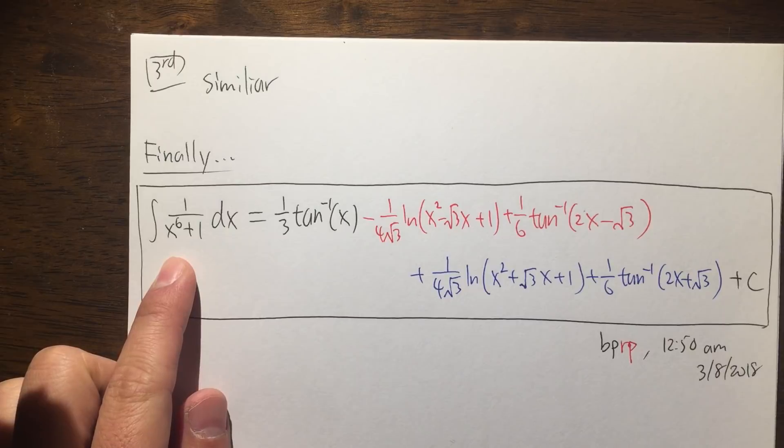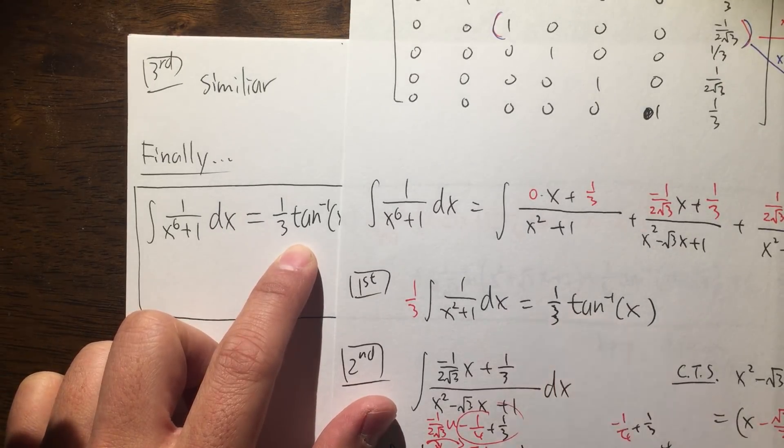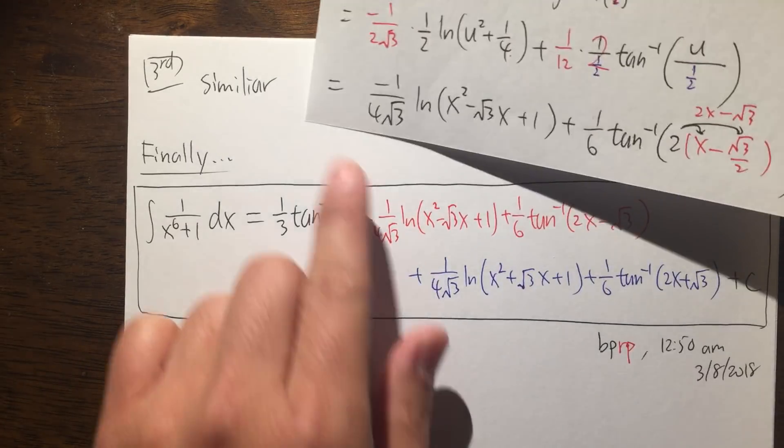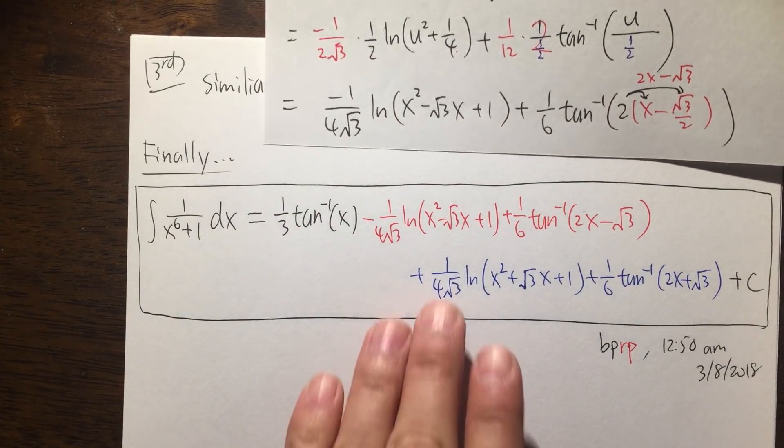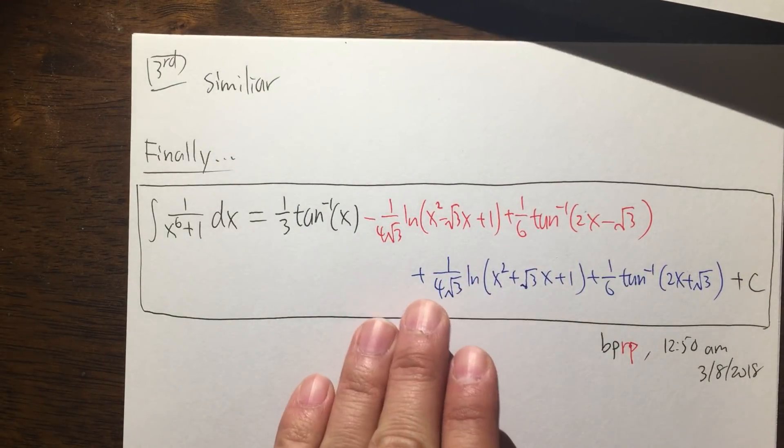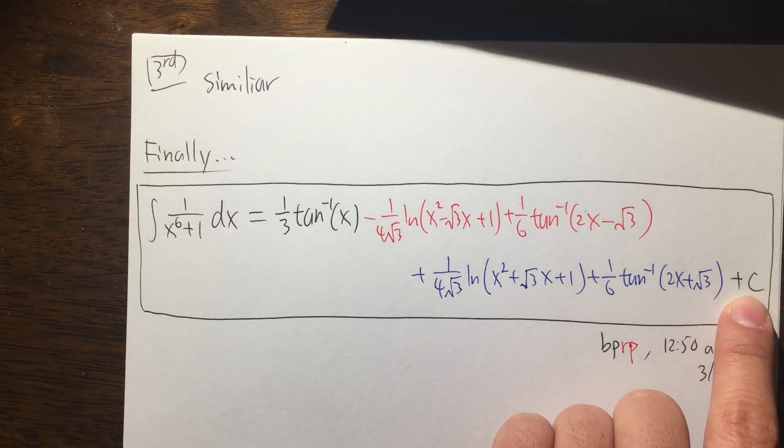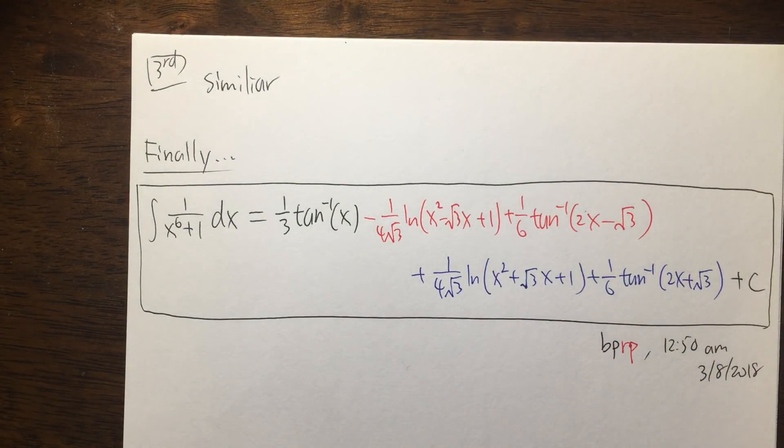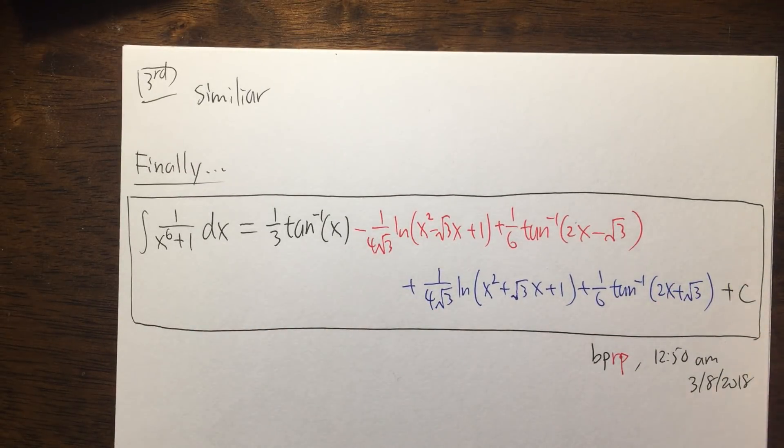So finally, the integral of 1 over x to the 6th power dx is the first one right here, which is this, and we add it with the second one, which is all that in red. And then the third one, it's pretty much you have all this again, but no more negative, you just have all the positive version of it. And in the end, of course, you have to put down the plus c. So this right here is pretty much the answer for the integral of 1 over x to the 6th power plus 1 dx by using partial fractions decomposition.